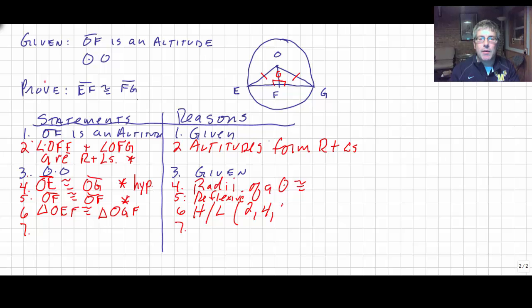So, our right angle, our hypotenuse, and our leg. And then, finally, we do get EF is congruent to GF by corresponding parts of congruent triangles are congruent.